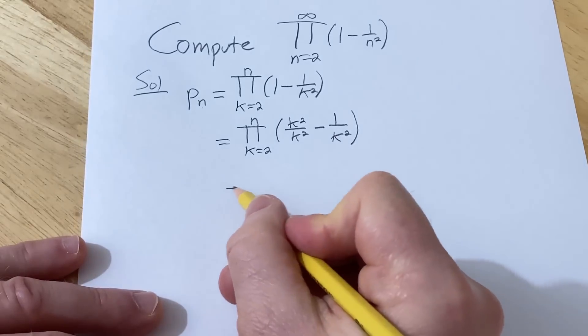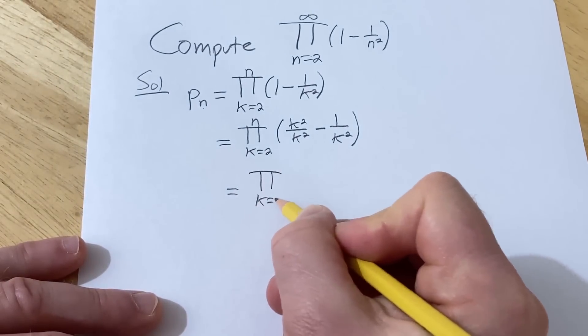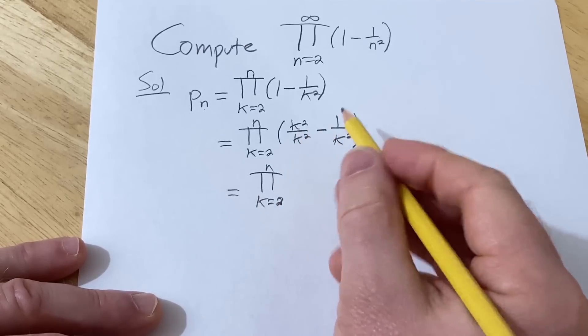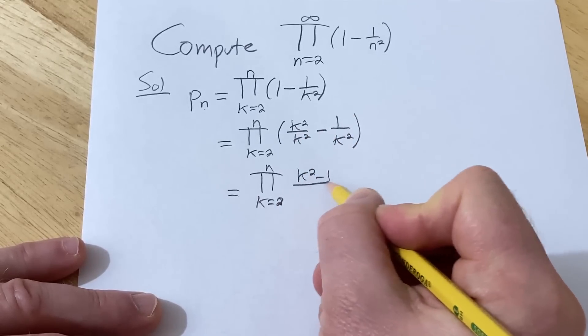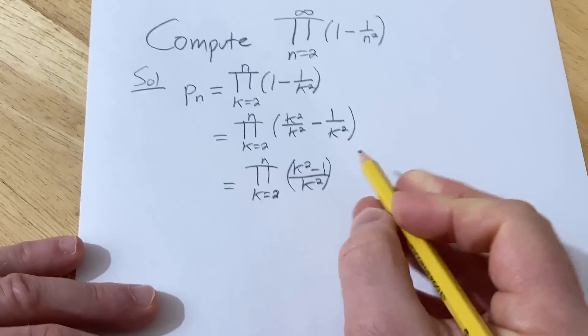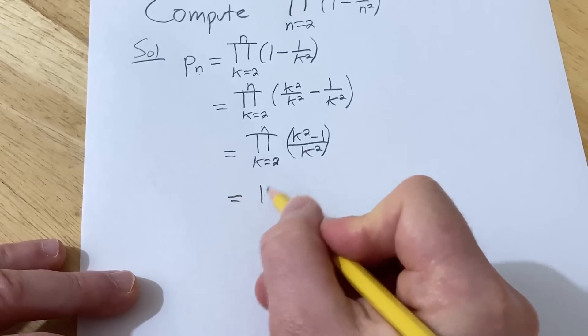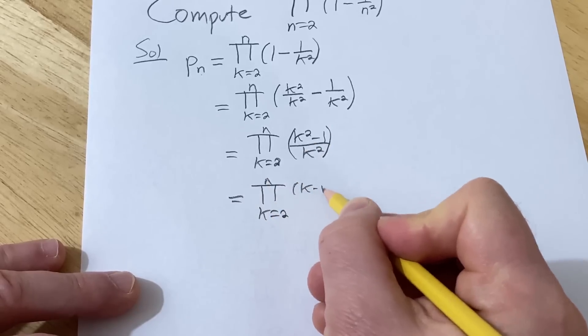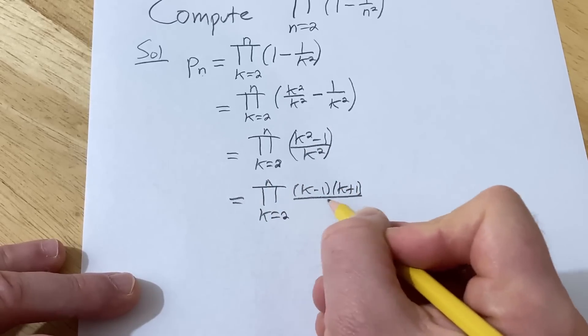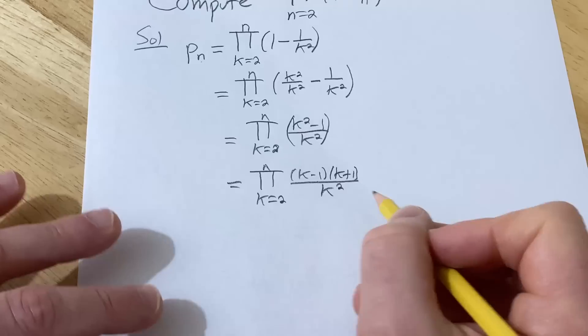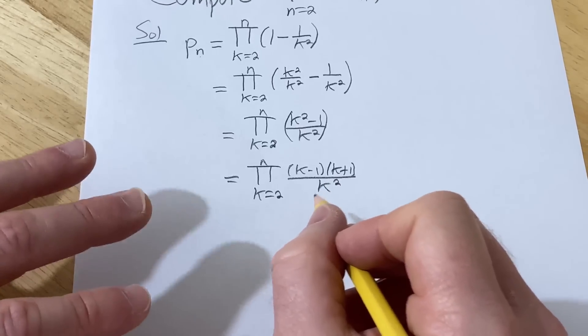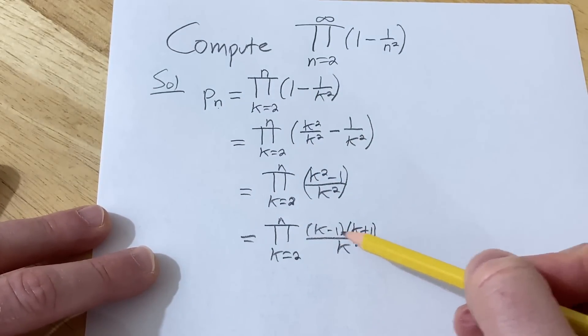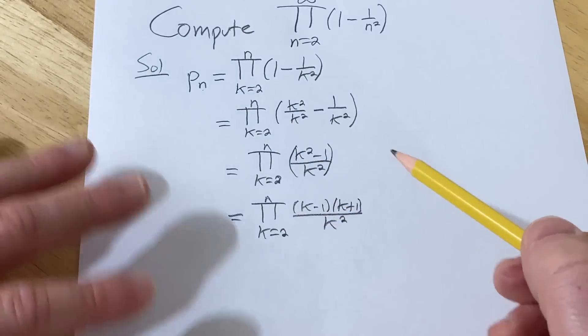Now basically we want to start plugging in the numbers like plug in 2 plug in 3 and try to find a pattern. So it's easier to find a pattern if this is written in a cleaner way. So let's try to factor this as much as possible. This is π k equals 2 to n. 1 can be written as k² over k² minus 1 over k². So this is equal to π k equals 2 to n and then now we have the same denominator so we can subtract. So this is k² minus 1 over k².